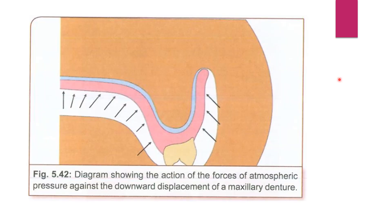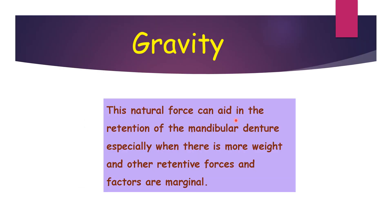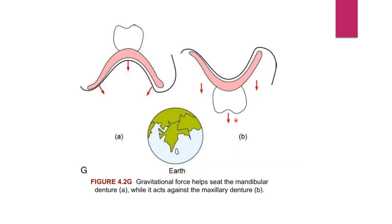A diagram shows the action of forces of atmospheric pressure against the downward displacement of the maxillary denture. Another picture shows that when the dislodging force acts on a properly extended denture, the pressure between the prosthesis and the mucosa drops, contributing to retention. The last factor is gravity — the natural force which can aid in the retention of a mandibular denture, especially when there is more weight and other retentive forces and the factors are marginal. Gravity helps seat the mandibular denture, but it acts against the maxillary denture.